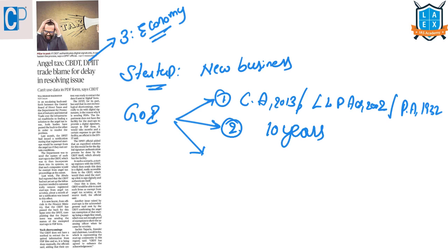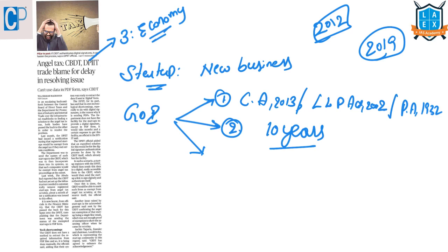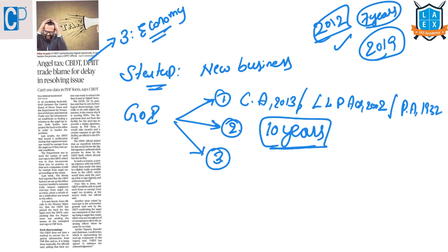The next condition is that from the date of registration it shouldn't be beyond 10 years — previously it was seven years, now it has been changed to 10 years. For example, a company registered in 2012, and now it is 2019, so there is a seven-year gap, which is within the 10-year limit, so this company will be granted startup status.